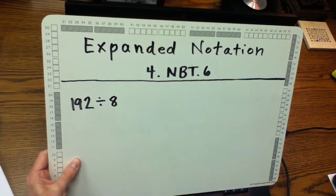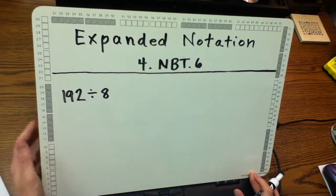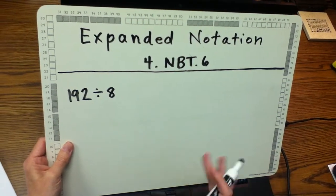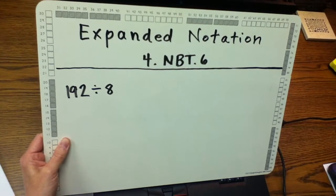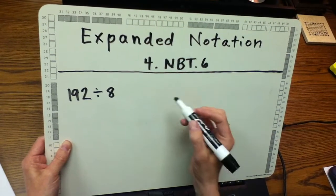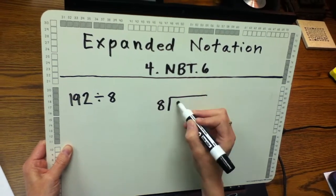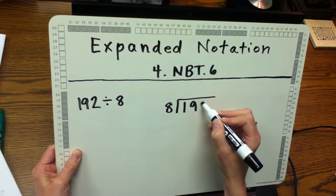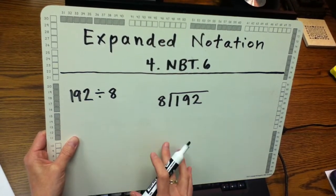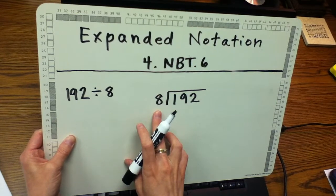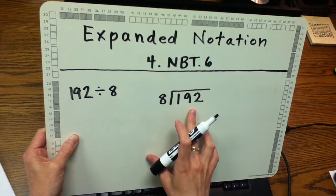I'm going to write the problem using the standard long division sign. Mr. Hernandez is going to work to find out how many groups of 8 are in 192, so that's what I need to do as well. I'm going to write it the same way I would with the standard algorithm, but the divisor factor goes on the left and the dividend or product goes inside the bracket.